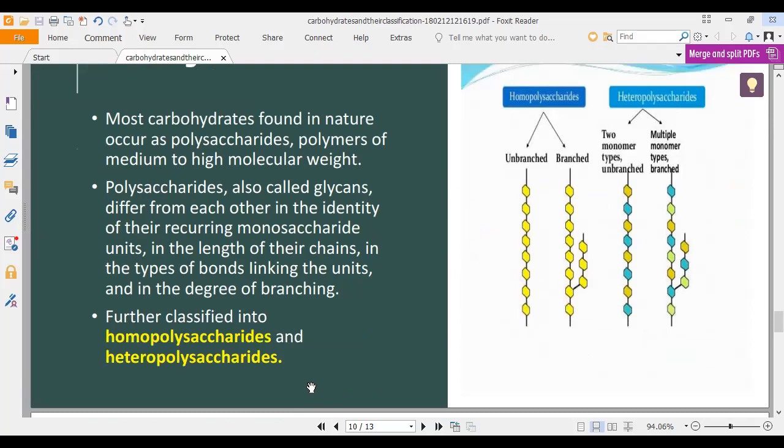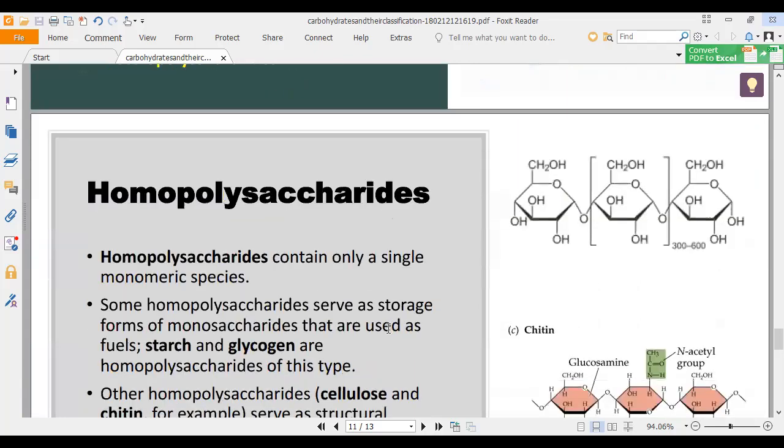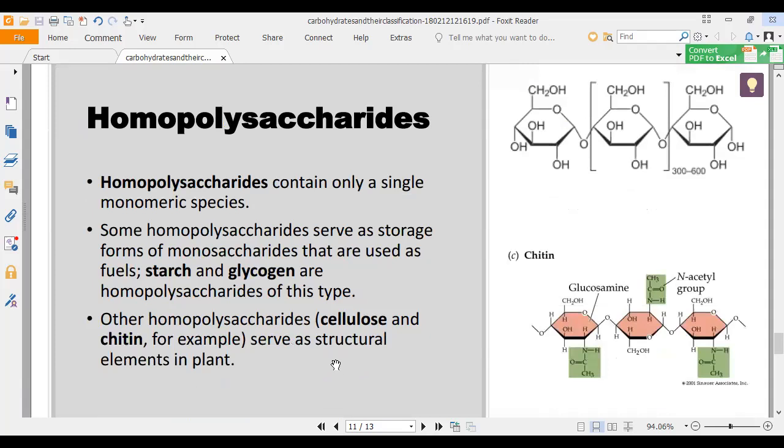Polysaccharides are classified into homopolysaccharides and heteropolysaccharides. Homopolysaccharides contain only a single monomeric species. Some homopolysaccharides are storage forms of monosaccharides used as fuel, such as starch and glycogen. Other homopolysaccharides, like cellulose and chitin, serve as structural elements in plants.